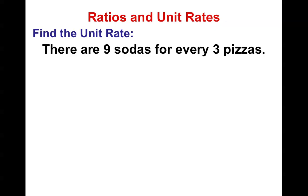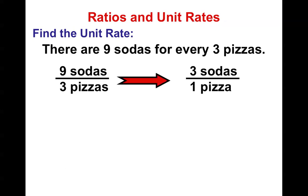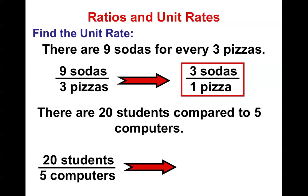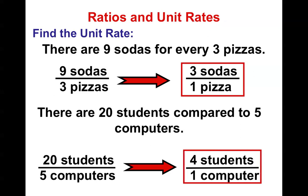So if I want you to find the unit rate here, I've got nine sodas for every three pizzas. I have nine sodas for every three pizzas. I simplify, and that basically means that I have three sodas for every one pizza. Twenty students compared to five computers. Remember this problem? We had 20 students to every five computers. We simplified it, and once again, that means there are four students for every one computer. The top number means something. The bottom number means something.